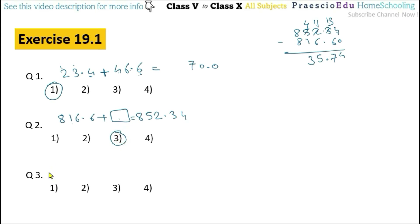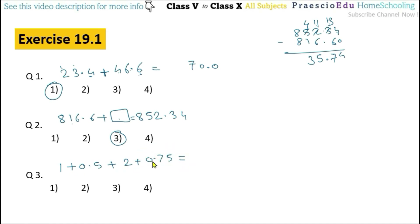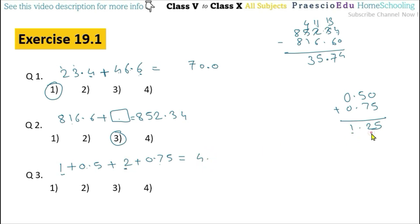Now question number 3: 1 and a half meters plus 2 and 3 quarter meters. So 1 plus 0.5, and 2 plus 3 quarters means 2 plus 0.75, equals 2.75. In a horizontal manner: 0.5 means 0.50 plus 0.75 equals 1.25. Then 1 plus 2 is 3, plus the carried 1 is 4 point 25. So 4.25 meters, given in option number 2.